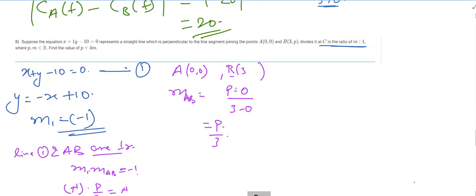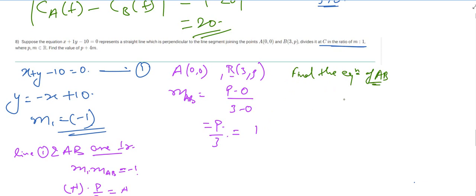We can now replace p with 3. The slope of AB, m_AB, equals 1, since p equals 3.